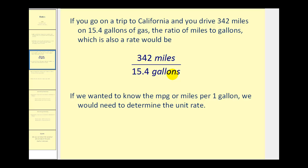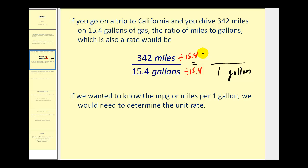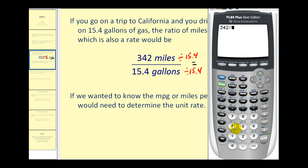If we want to know the miles per gallon, or miles per one gallon, we would determine the unit rate. We would rewrite this rate with a denominator of one gallon. If we take 15.4 gallons and divide by 15.4, that gives us one gallon. We do the same to the numerator: 342 miles divided by 15.4 gives us the number of miles per one gallon, which is approximately 22.2 miles per one gallon.